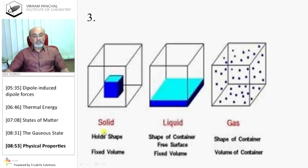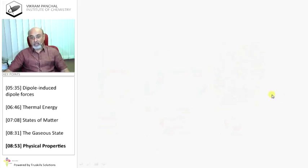Solid holds a shape, it has a fixed volume. Liquid carries the shape of the container, it has a fixed free surface, and it has a fixed volume. Gas has the shape of the container and volume of the container. It has no fixed volume.